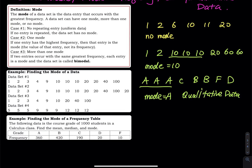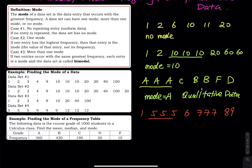The next case is more than one mode. For example: 1, 5, 5, 5, 6, 7, 7, 7, 89. Both 5 and 7 have the highest frequency, so there are two modes: 5 and 7.